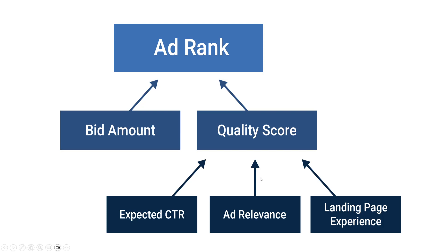Ad relevance is primarily measured by the keywords found in the ad, so you should incorporate keywords into the ad copy whenever possible. The keywords you selected should go into that ad copy. Also, ad groups should be organized around a smaller number of keywords — fewer keywords makes it easier to achieve high ad relevance, whereas a huge long list of keywords makes it trickier to get that relevance.